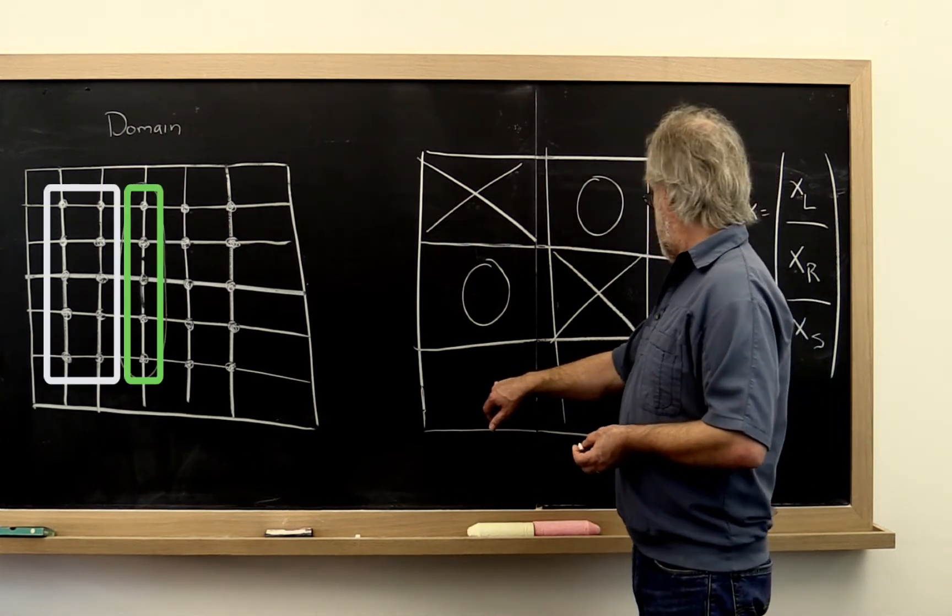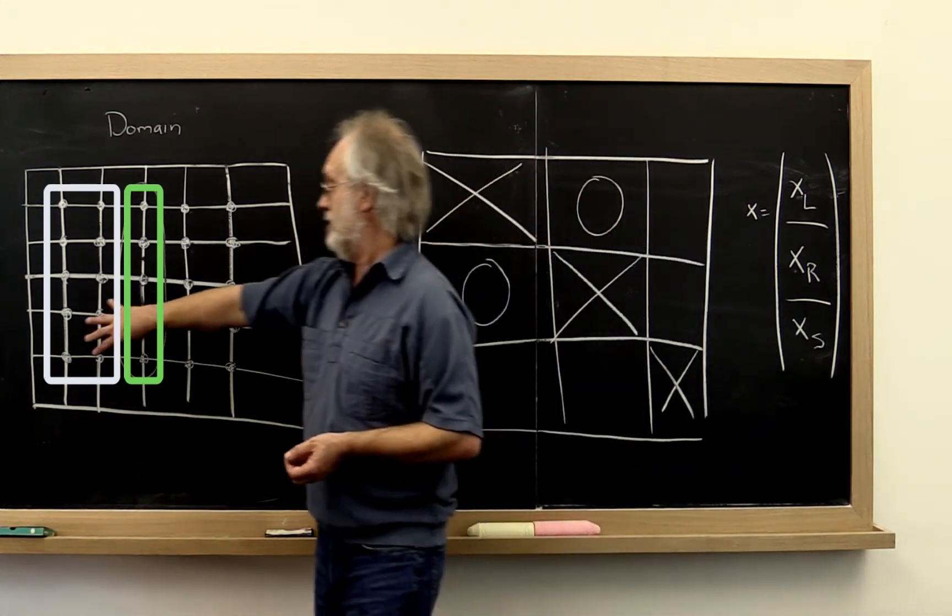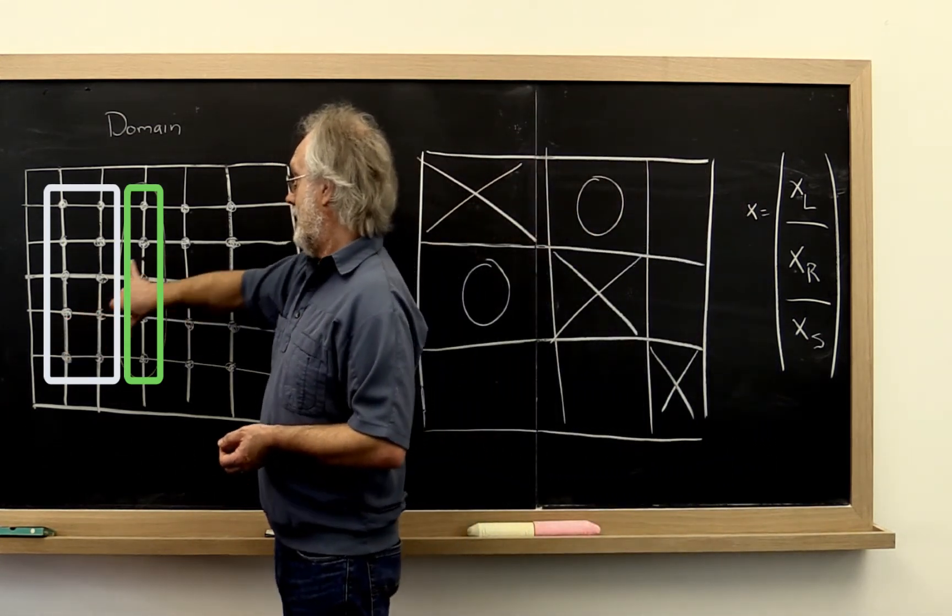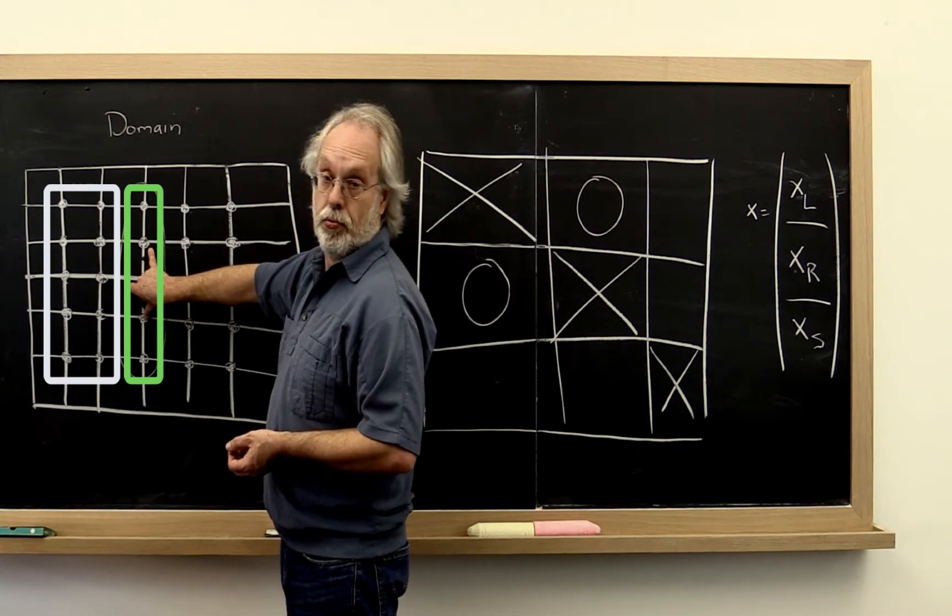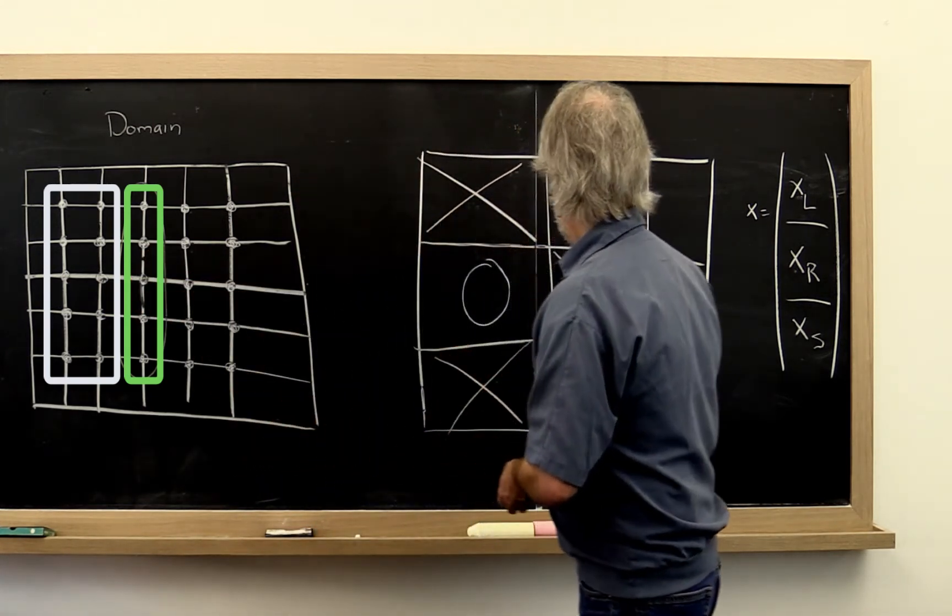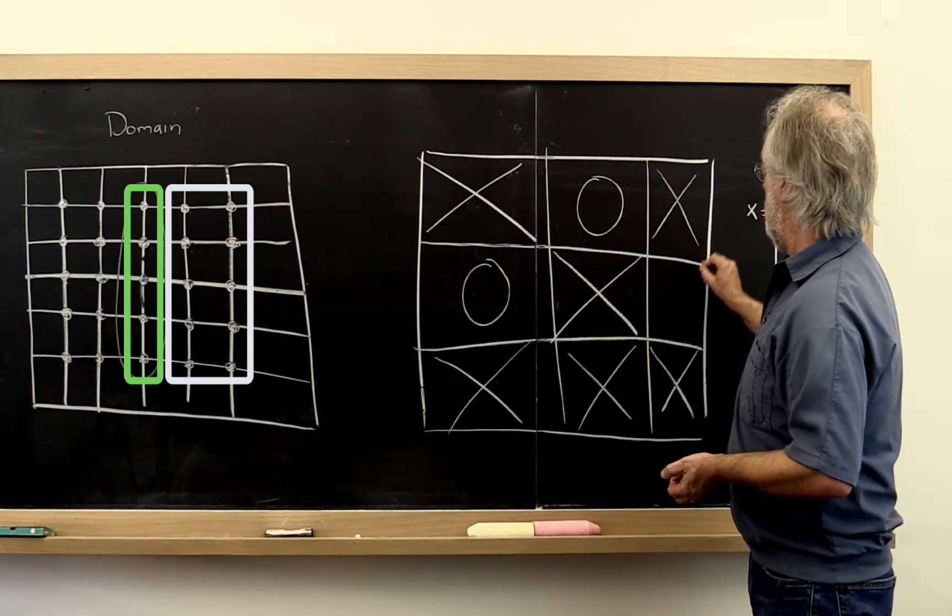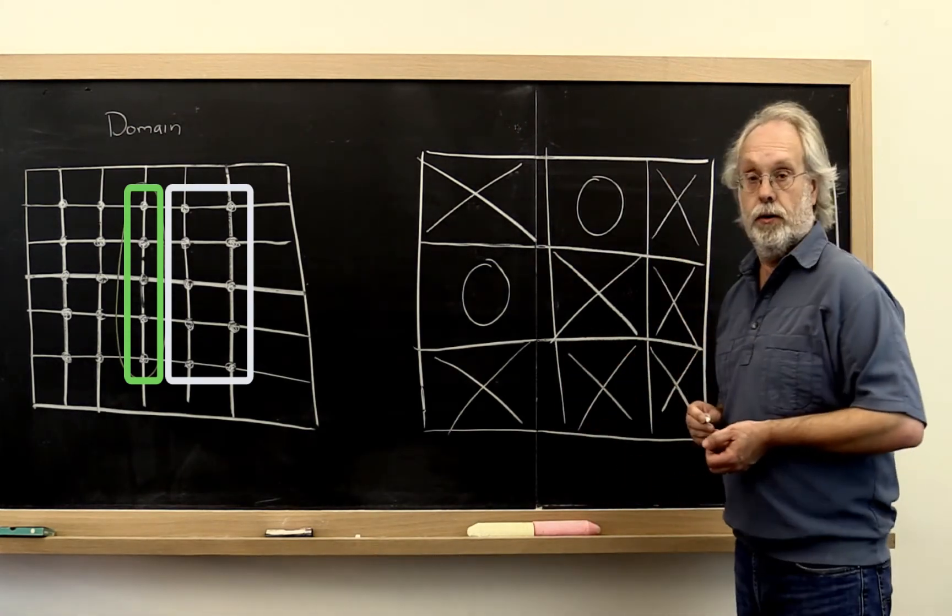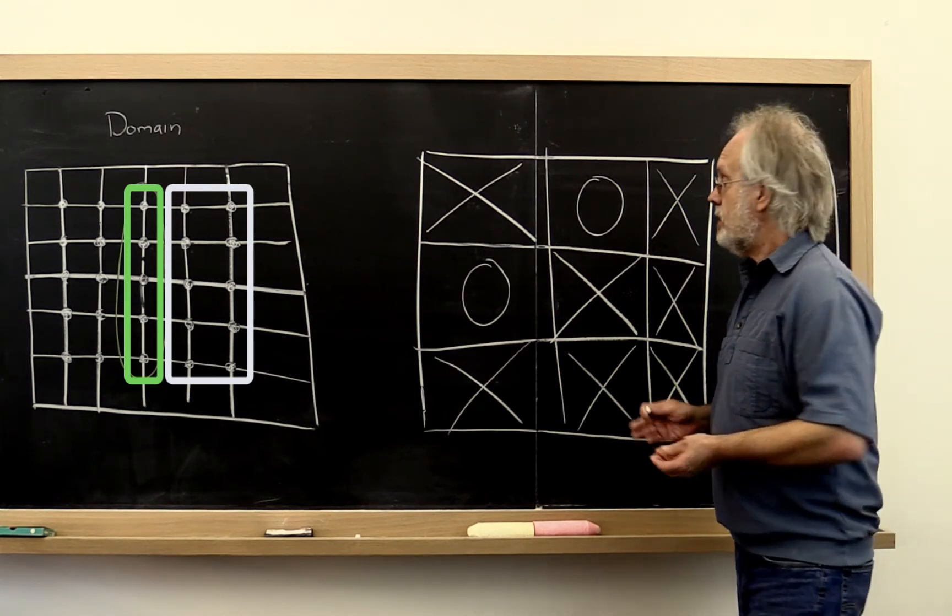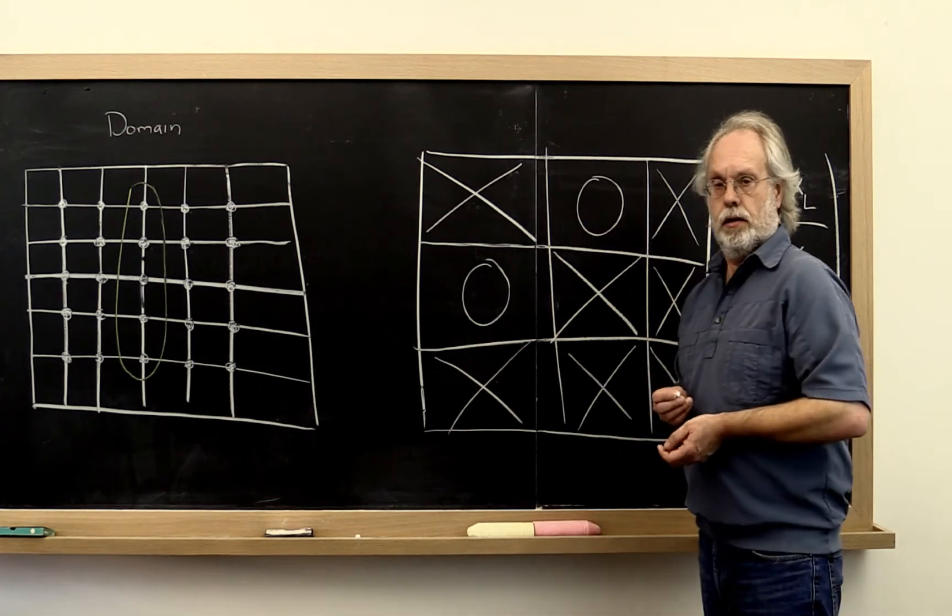This block right here captures how the left sub domain is connected to the separator. And there would be non-zeros there. Similarly, there would be non-zeros here. And by symmetry there would be here and here as well. And what you end up with is this arrowhead matrix like this.